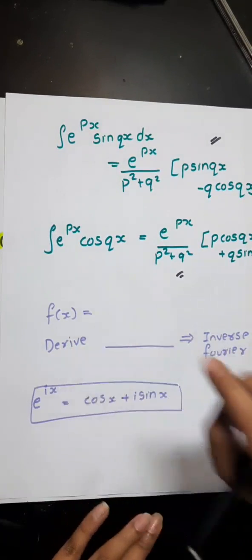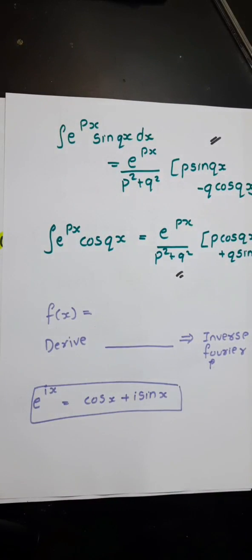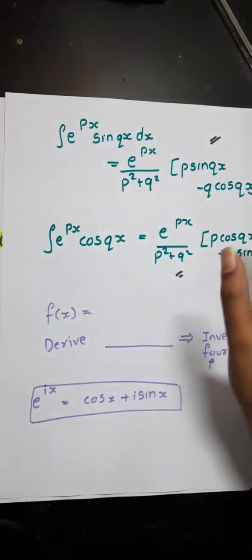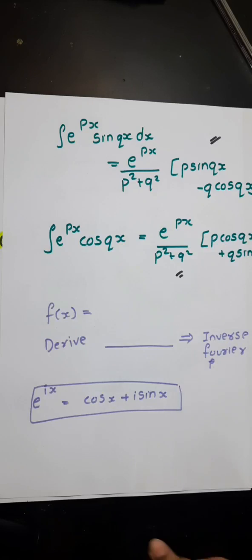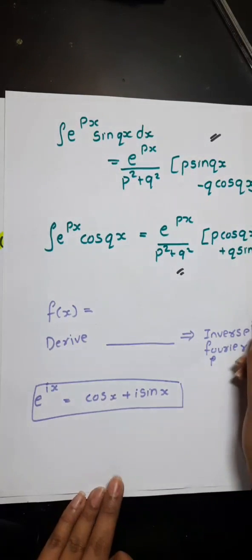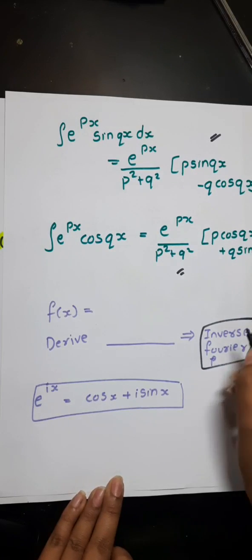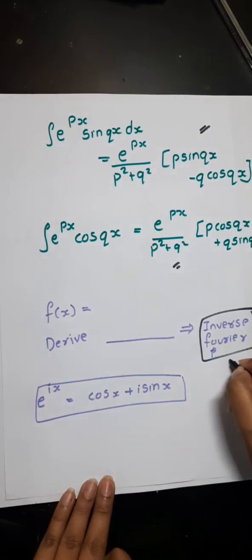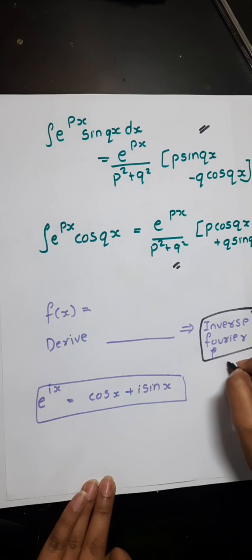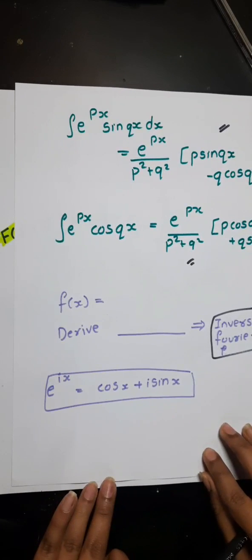Your question would be something like, find the Fourier transform of the following function and derive something. If in question, it is asked to derive something, always use inverse Fourier transform. This is the tip. Whenever it is given to derive something, always use inverse Fourier transform.